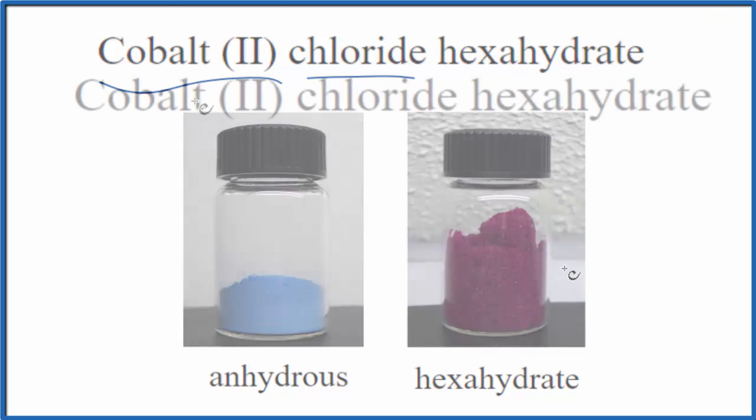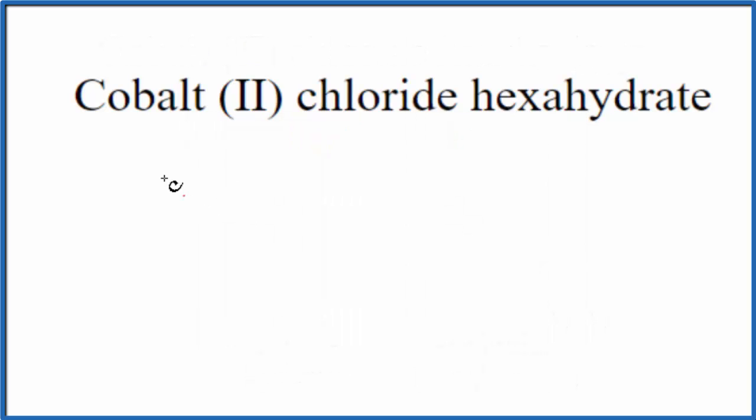So let's write the formula. We're going to write cobalt CO, just like we find it on the periodic table. This 2, the Roman numeral, tells us it has a 2 plus ionic charge. That's because it's a transition metal. They need to give us that information in the formula. Chloride, that's Cl.